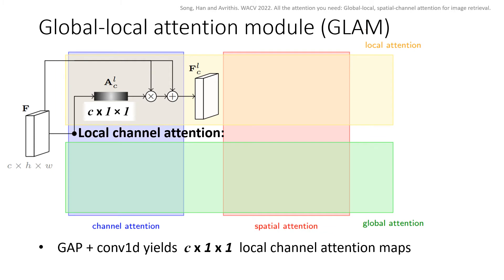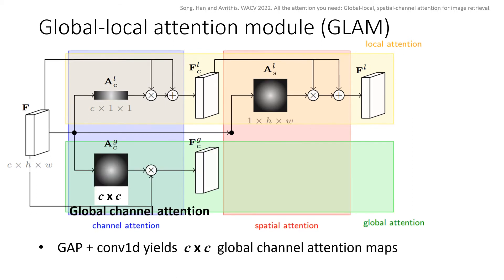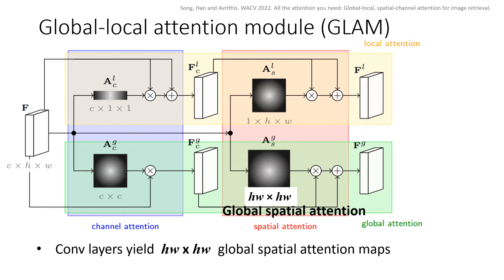In the local attention stream, we first make a local channel attention from the original feature F and get the local channel attention feature map. In the global attention stream, we first make a global channel attention from the original feature F. The C by C global channel attention map captures the pairwise interaction between different channels. Next, we make global spatial attention from the original feature F and multiply with the global channel attention feature map. This HW by HW attention map captures the interaction between different spatial locations.